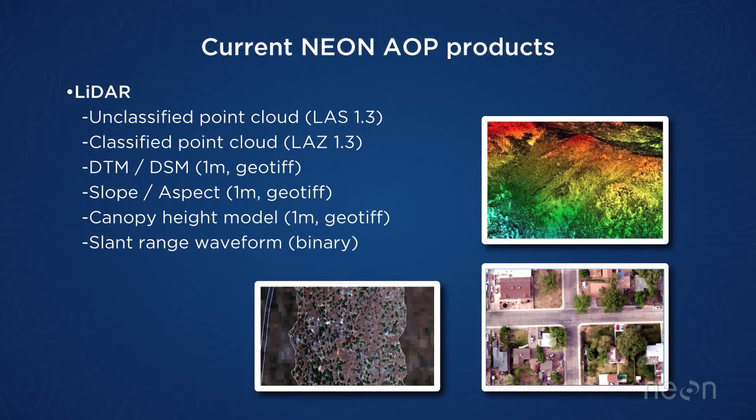The main products from the LiDAR are the unclassified point cloud and classified point cloud — both L1 products — and then the L3 raster products: digital terrain model, digital surface model, slope and aspect, canopy height model, and the slant range waveform.